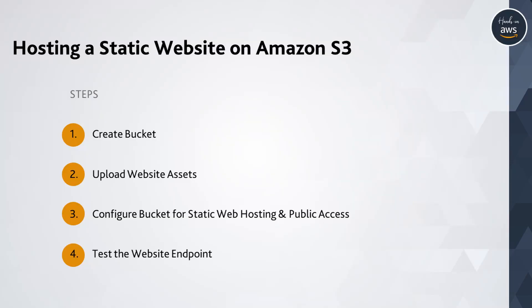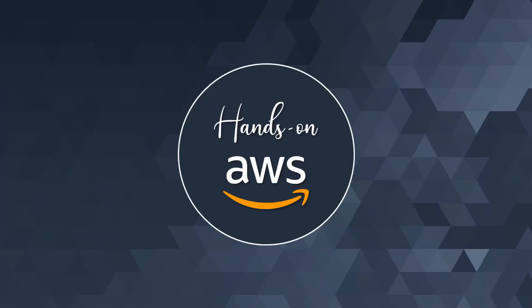So we saw how easy it is to set up a static website on Amazon S3. We started by creating a bucket, uploaded all the website assets to that bucket, and then configured that bucket for static web hosting and public access. We then finally tested that the website is working and accessible from the public internet. That's it for now — we'll explore more solutions that you can architect using AWS services in upcoming videos. Stay tuned to Hands-On AWS.